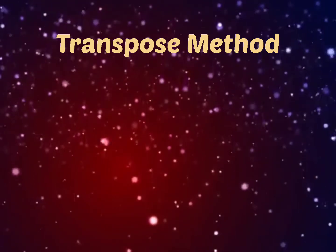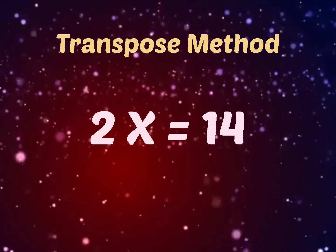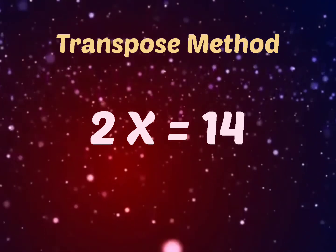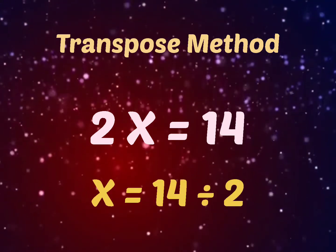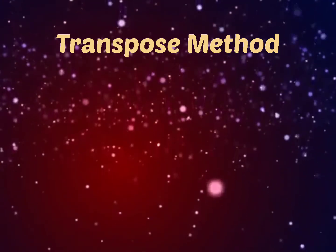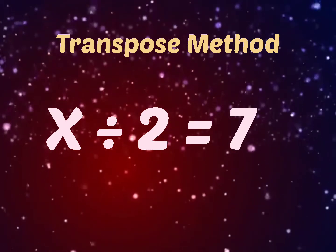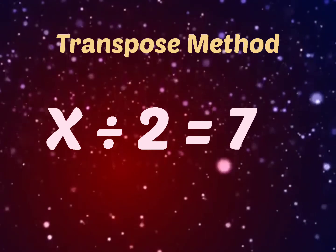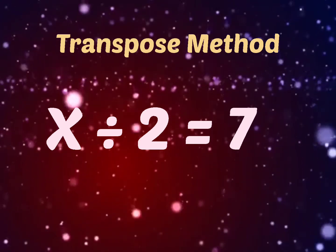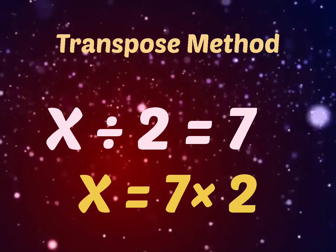The third concept is multiply transposes to divide. In the equation 2x is equal to 14, the 2 multiplied on the left hand side is transposed to divide on the right hand side, giving x is equal to 14 divided by 2. The last concept is divide transposes to multiply. In the equation x divided by 2 is equal to 7, the division on the left hand side is transposed to multiply on the right hand side, giving x is equal to 7 into 2.